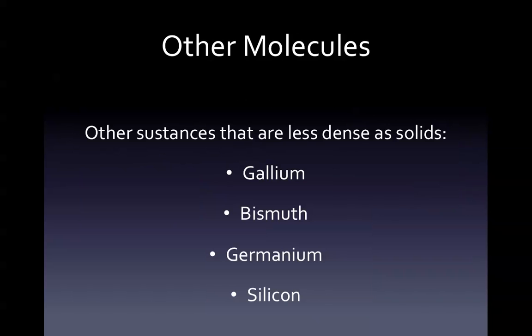Other molecules with the same function include gallium, bismuth, germanium, and silicon. These elements would not be essential to support life because they are at all irritating to skin and tissue.